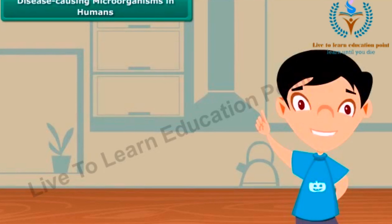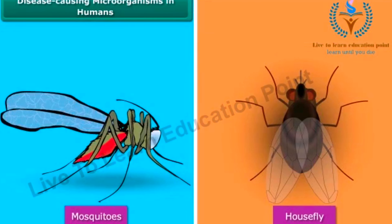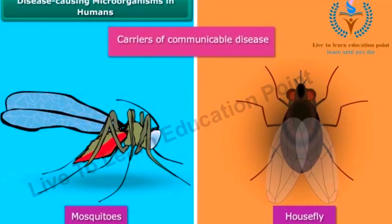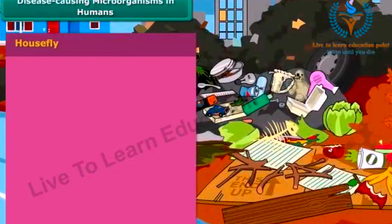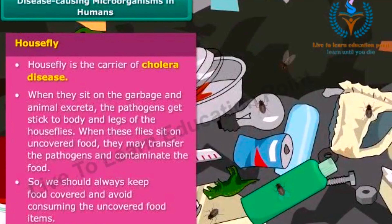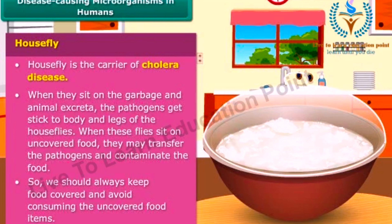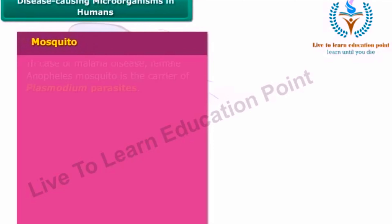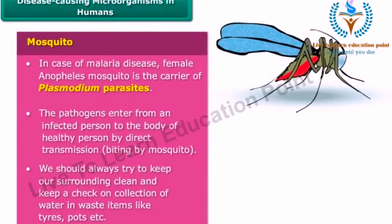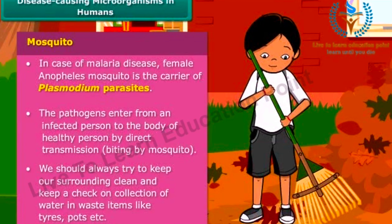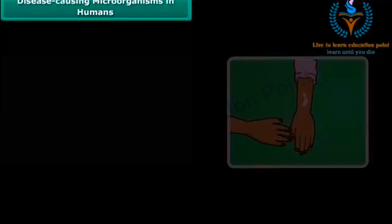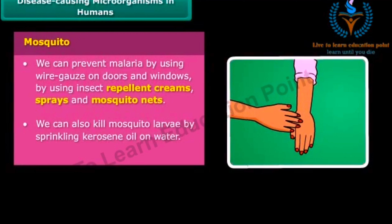Some insects and animals found in our surroundings act as carriers of pathogens. Houseflies and mosquitoes are common examples of such carriers. In cholera disease, the housefly is the carrier of many pathogens. To prevent cholera, we should always keep food covered and avoid consuming uncovered food items. In malaria disease, the female Anopheles mosquito is the carrier of Plasmodium parasites. We should use repellent creams, sprays, and mosquito nets to prevent malaria.